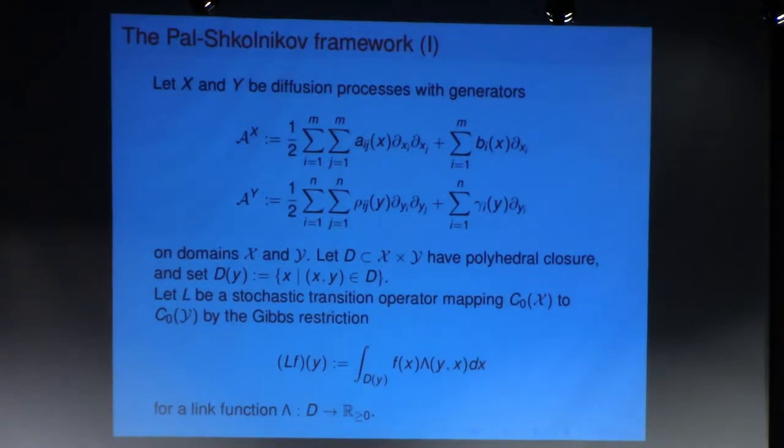Now what I want is that there's some sort of relation, some sort of notion of Gibbs restriction from measures on the top level to measures on the lower level. And that's going to be implemented by this Gibbs density lambda. And in their framework, it's called a link function.